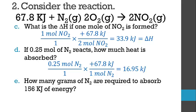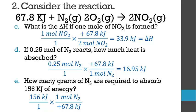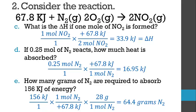How many grams of nitrogen are required to absorb 156 kilojoules of energy? We start with 156 kilojoules, cancel those out using 67.8 kilojoules per one mole of nitrogen, then use molar mass to convert to grams. One mole of nitrogen has a molar mass of 28 grams — nitrogen is diatomic, so 14 times 2. The answer is 64.4 grams of nitrogen.